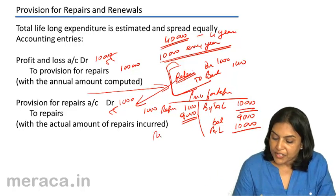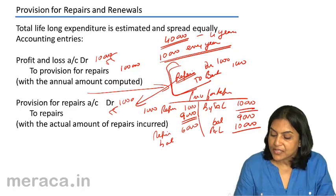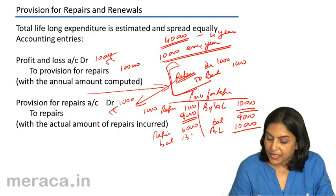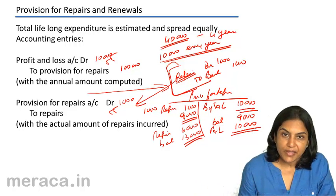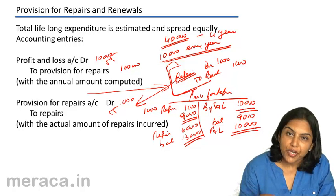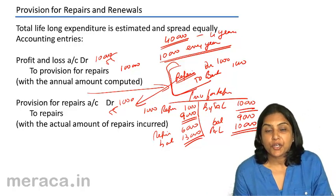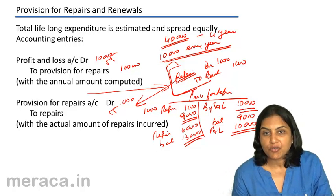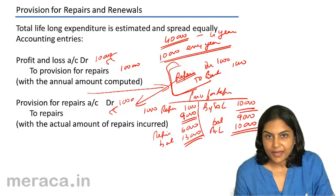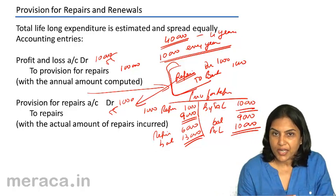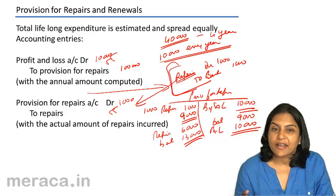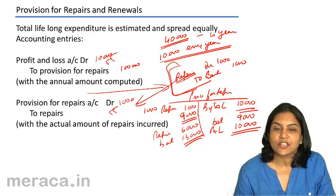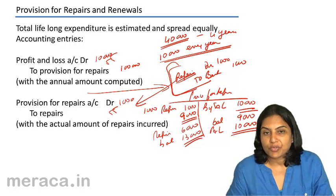In the next year, repairs could be a little more, maybe at 6,000, so that we have a balance now of 13,000. The advantage of this method is that every year a uniform charge is made on the profit and loss account and a provision is created. The amount of repairs is usually expected to increase over time, but we make an estimate and try to spread this cost of repairs uniformly throughout the life of the asset.